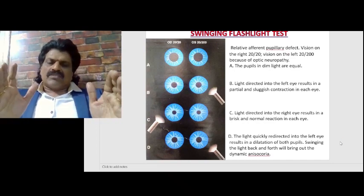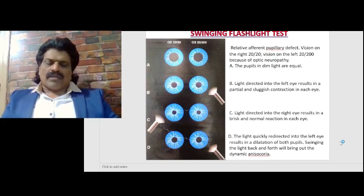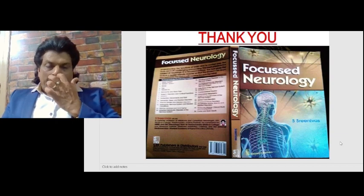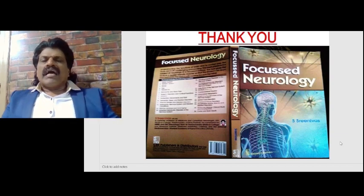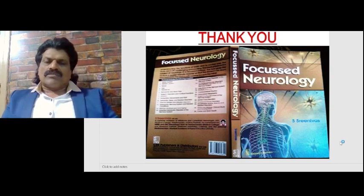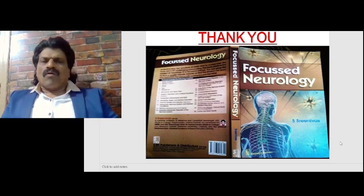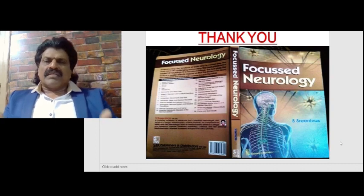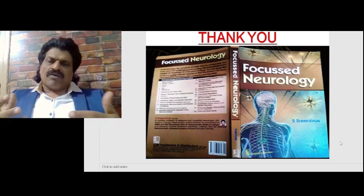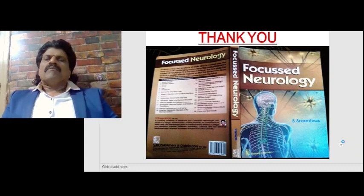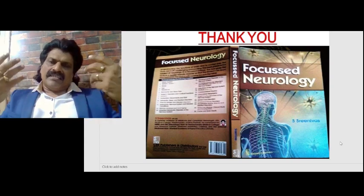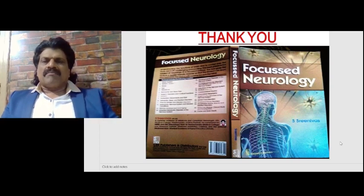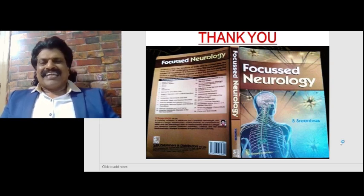This is known as relative afferent pupillary defect, characteristically seen in multiple sclerosis. These are the fascinating concepts of relative afferent pupillary defect. Other fascinating concepts I have put in a question-and-answer format in a book called Focused Neurology, written by me, Dr. S. Srinivas. It is available online from all leading booksellers including Amazon. If you enjoy listening to my lectures, please like, share the link with your friends, and subscribe to my YouTube channel Dr. Srinivas Medical Concepts and my Facebook page Dr. Srinivas Medical Concepts. Thank you, bye.